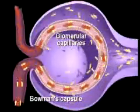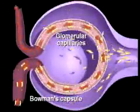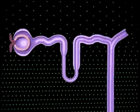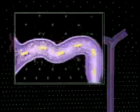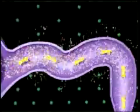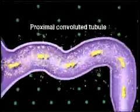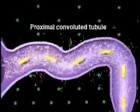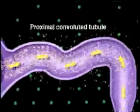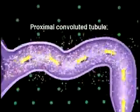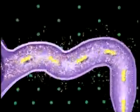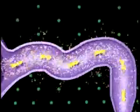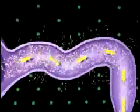The filtrate is captured within a chamber called Bowman's capsule. The next nephron section, the renal tubule, has three parts in series. Filtrate within Bowman's capsule enters the proximal convoluted tubule, where reabsorption of important molecules and ions from filtrate back into blood occurs.